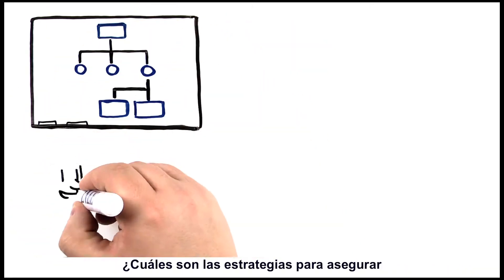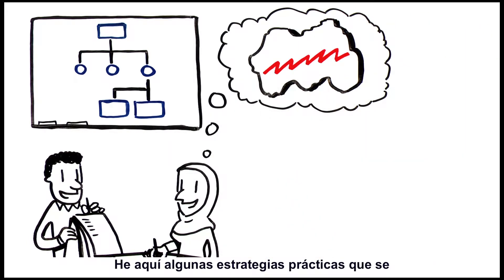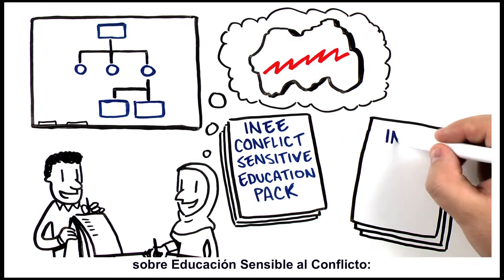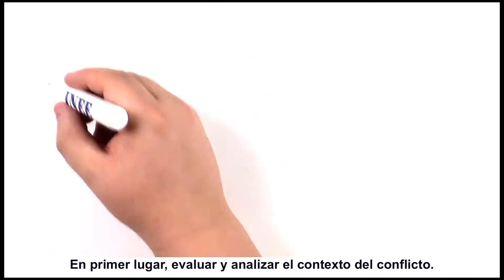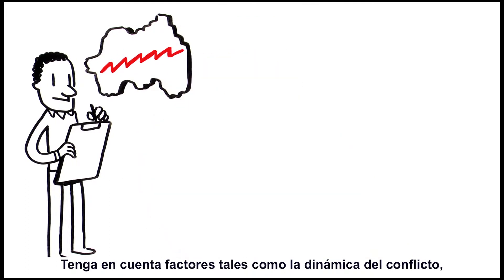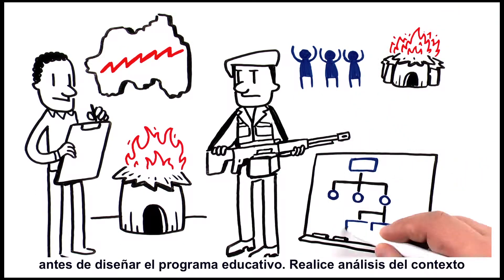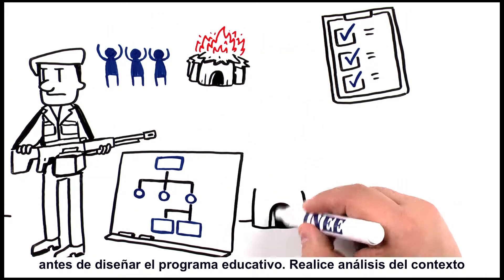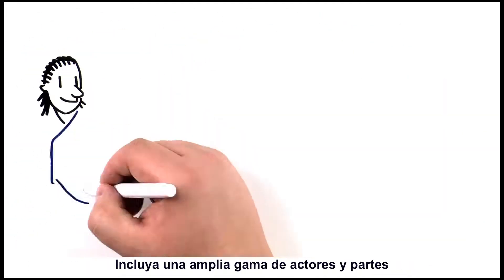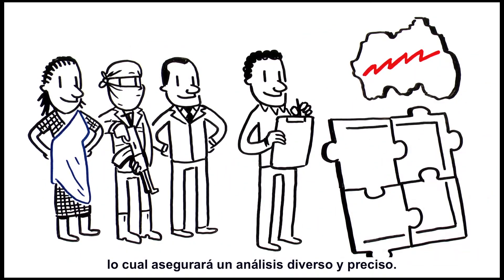What are the strategies for ensuring conflict-sensitive education? Here are some practical strategies informed by the INEE Conflict-Sensitive Education Pack and the INEE Minimum Standards. Firstly, assess and analyse the conflict context. Consider factors such as conflict dynamics, actors, profile and causes before designing the programme. Refer to the analysis of the context and conflict through the programme cycle.